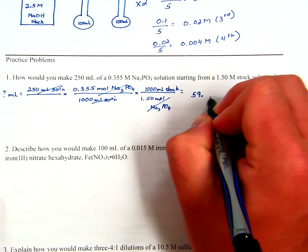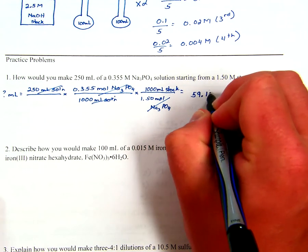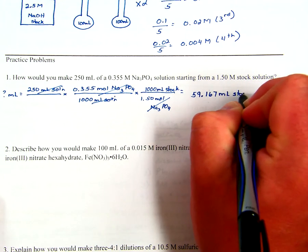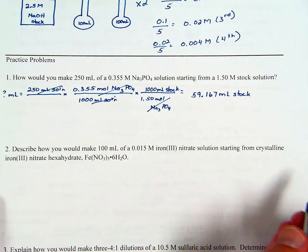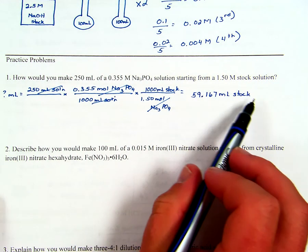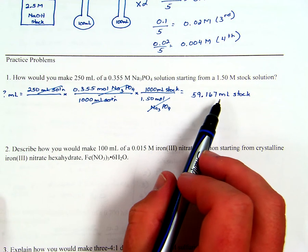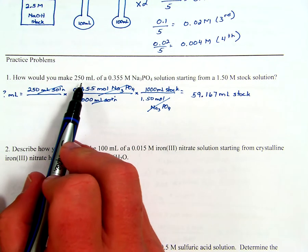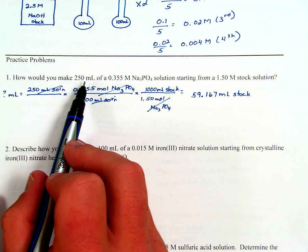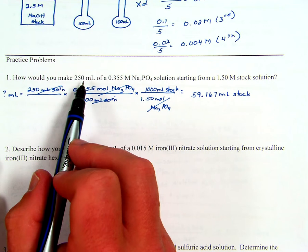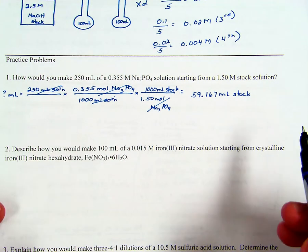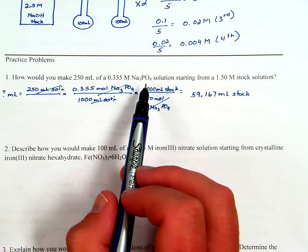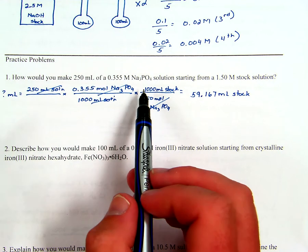To make that solution: measure 59.167 milliliters of stock, put it into a 250 milliliter volumetric flask, fill with water to the mark, cap, and invert 12 times. This is not an acid, so you don't need to add water first — though you always can put some water in the flask first, add the stock, mix it up, and you're good to go.